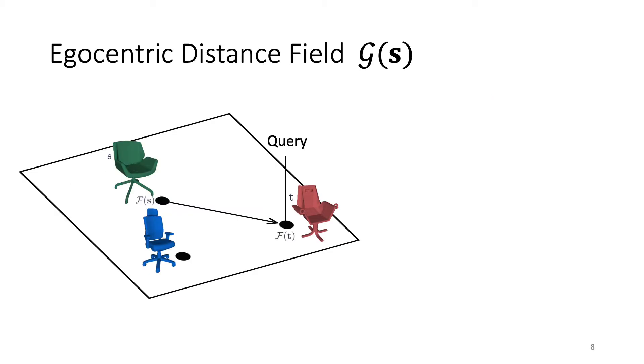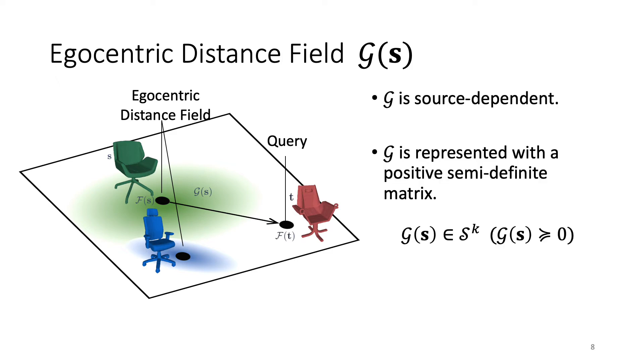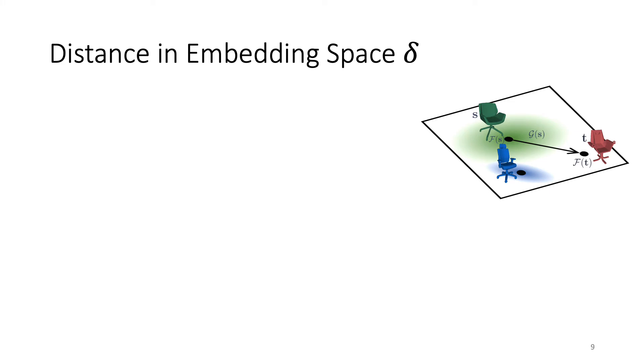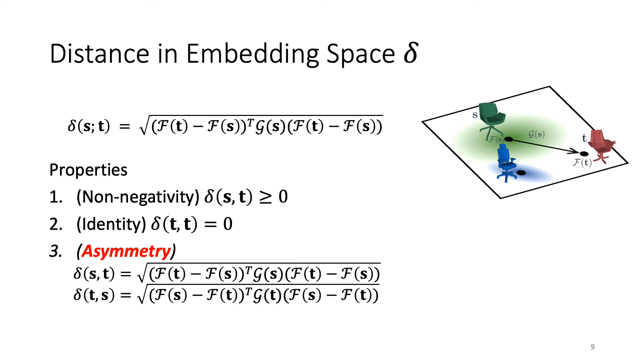To handle asymmetry in our embedding space, in addition to shape-latent code F, we introduced an egocentric distance field G for each source shape S. G is source-dependent and is a positive semi-definite matrix. We used a positive diagonal matrix in our experiments. Drawing inspiration from the Mahalanobis distance, the distance in our embedding space delta, given by this equation, is calculated using both F and G. Delta is always non-negative because G is enforced to be positive semi-definite. Hence, it satisfies the three properties of our fitting gap, where asymmetry is satisfied because of our source-dependent egocentric distance field G.